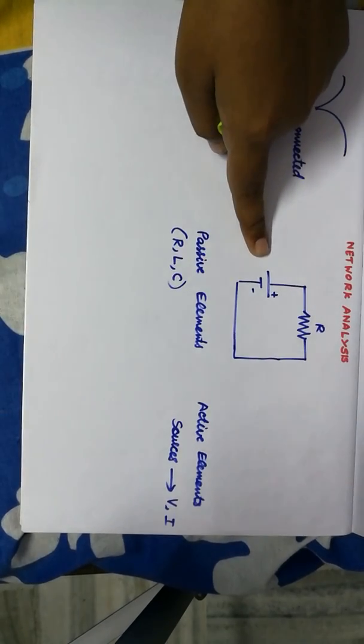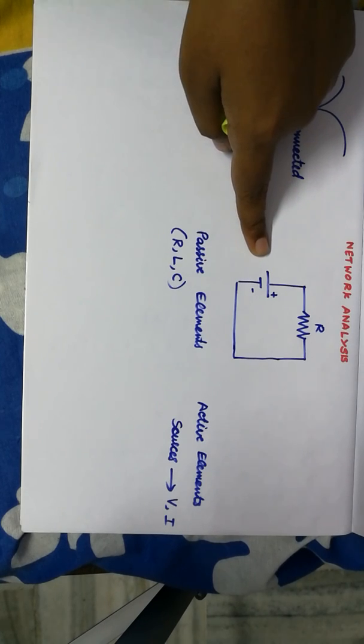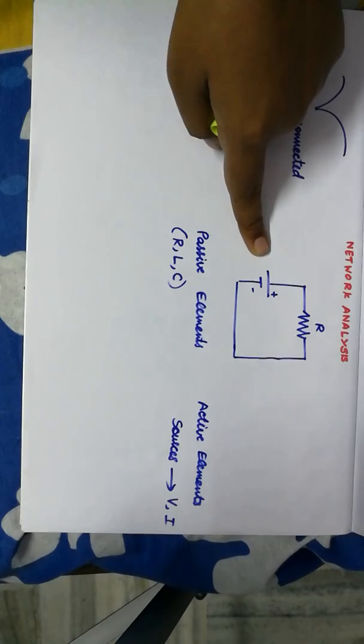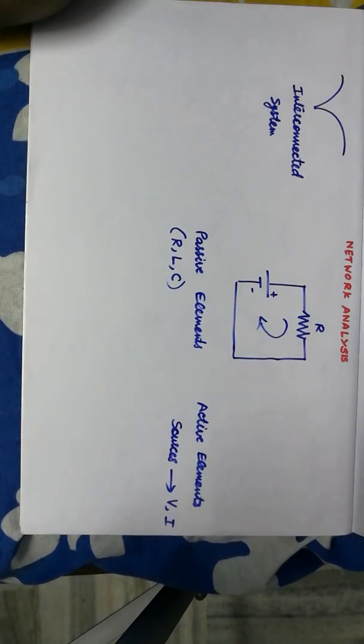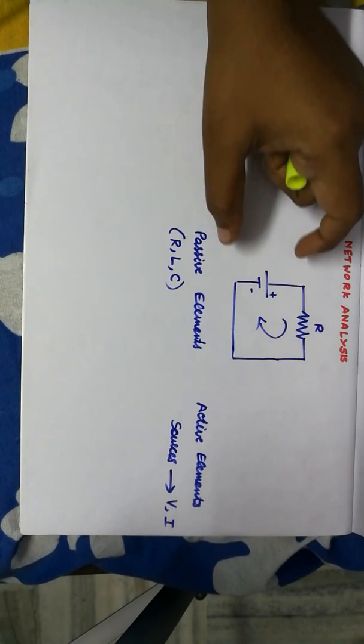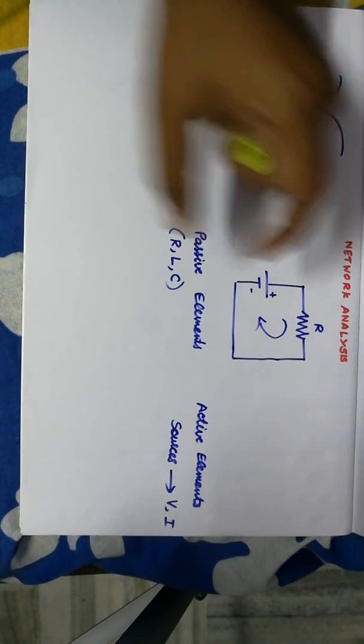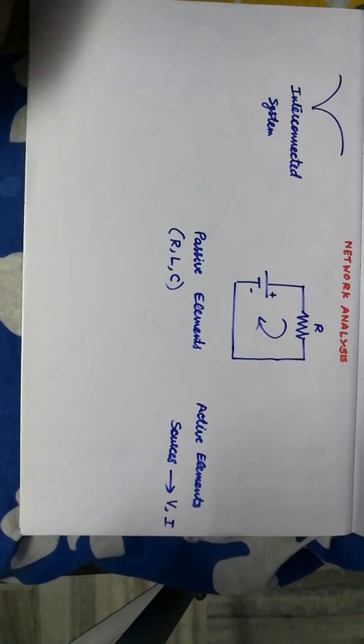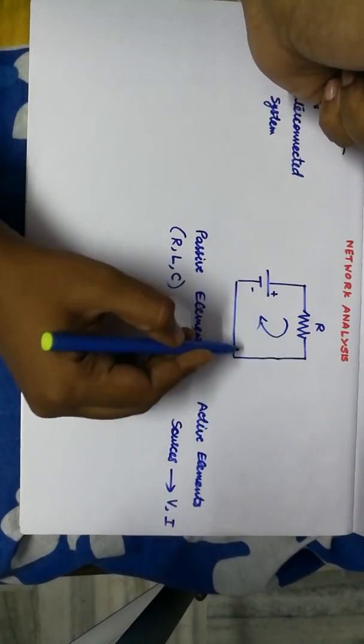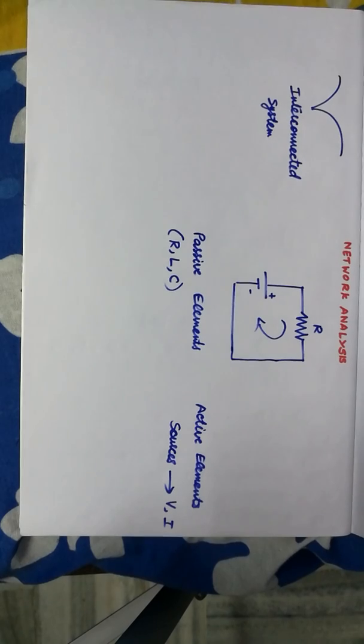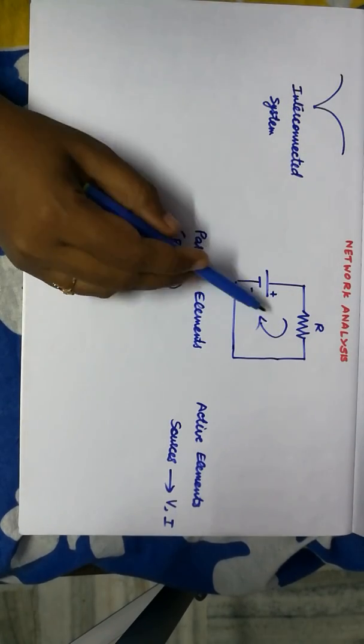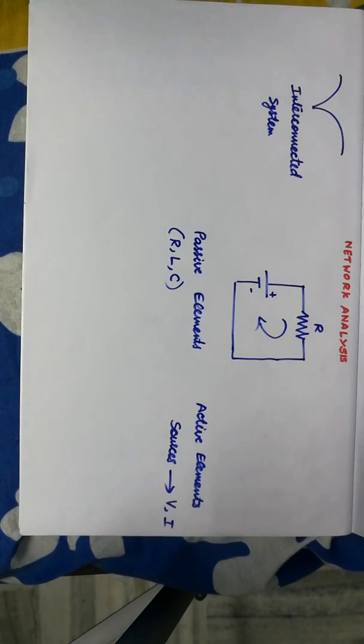Now, when I draw this, it's not complete because current will definitely flow through any closed path. We already know that current will only flow through closed path. It cannot flow through an open circuit. So, here we have a closed path. Current will flow through it. We have to assume the direction of current always in order to analyze any circuit.